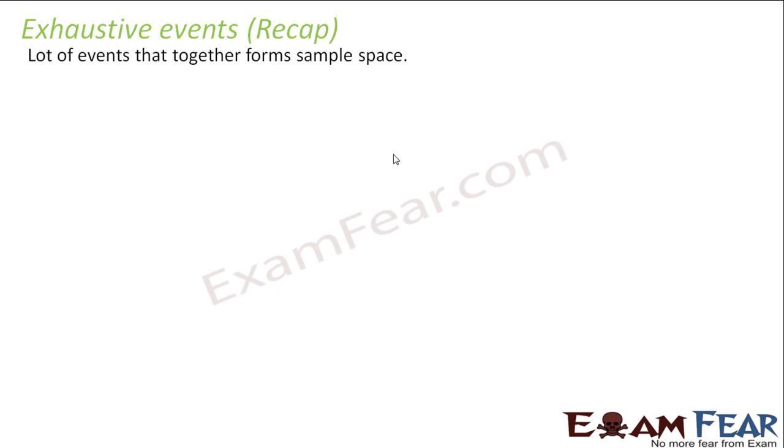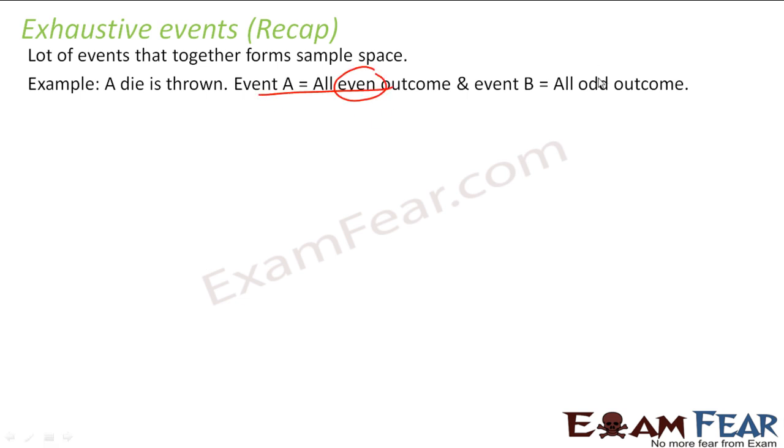And exhaustive events - you have lot of events, you add together and if that forms a sample space, that is called exhaustive events. For example, when you throw a die, let's suppose event A is all even outcomes and event B is all odd outcomes. Then A will have even numbers two, four, six, and B will have odd outcomes one, three, five.